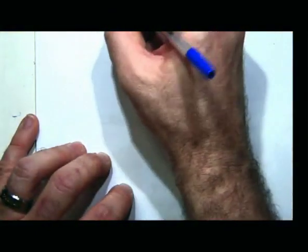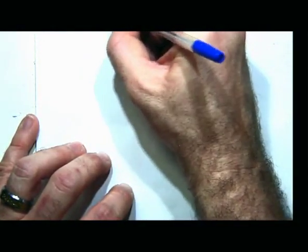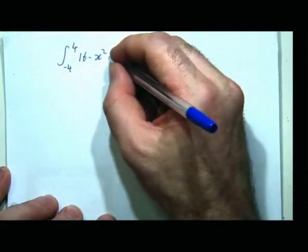I'm going to find an example from the exam. We're given the integral from -4 to 4 of (16 minus x squared) dx. They've said: calculate the upper sum using four intervals.